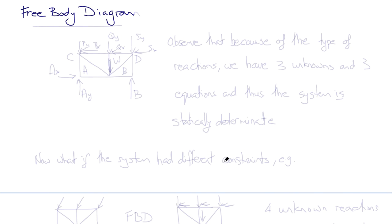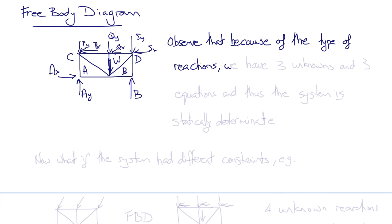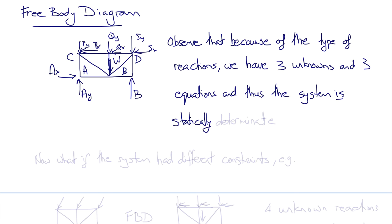Drawing the free-body diagram for the whole structure: the applied force components are Px and Py, Qx and Qy, Sx and Sy, plus the weight acting through the center of mass. The reaction force components are Ax and Ay at A, and By at B. Because of the types of reactions, we have three unknowns and three equations, so the system is statically determinate.